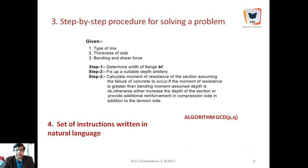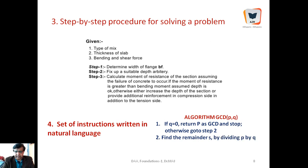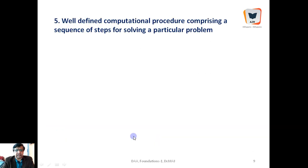Algorithm is also defined as a step-by-step procedure for solving a problem. This definition holds well for mechanical, civil, and electrical engineers. For a typical civil engineer, the design procedure involves assuming slab thickness and mix type with codal provisions and heuristic knowledge. An algorithm is a set of instructions written in natural language — for example: if Q equals 0, return P as the greatest common divisor and stop; otherwise go to step 2: find the remainder S by dividing P by Q; step 3: assign Q to P and S to Q, then go to step 1.